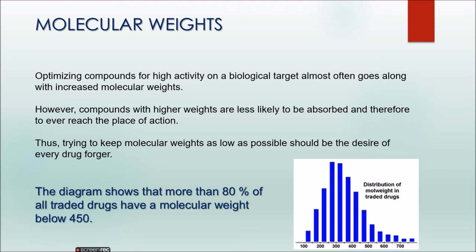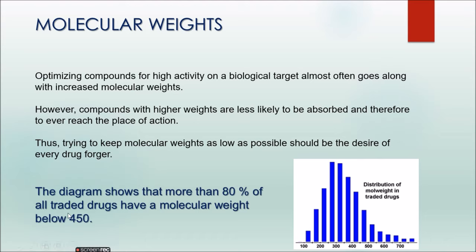Statistics have shown that almost all traded drugs — more than 80% — were found to have molecular weight below 450. So you should have a molecular weight below 450. That is the range given. For log S, you have a range; for log P, you have a range; and for molecular weight, also a range. All these rules put together will help you determine whether your molecule is drug-like or not.